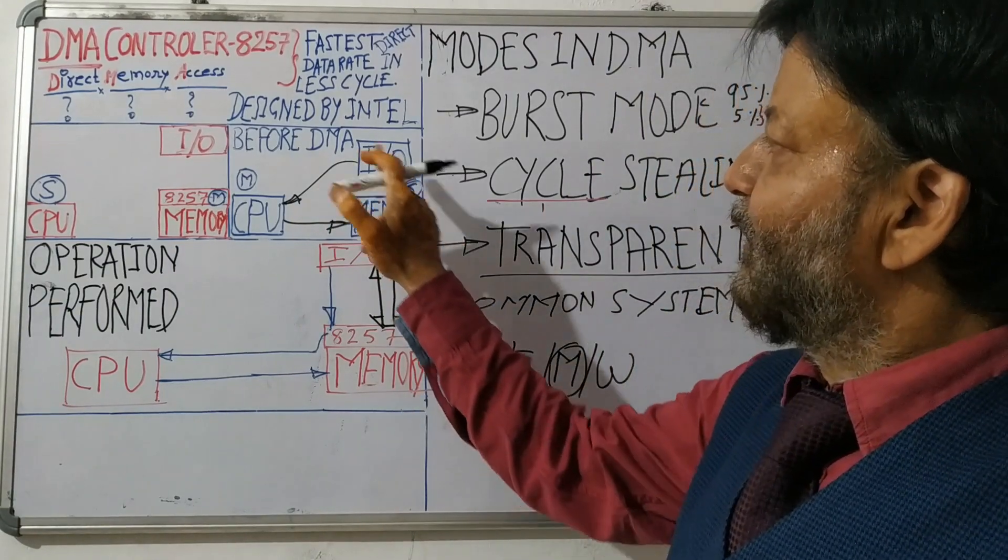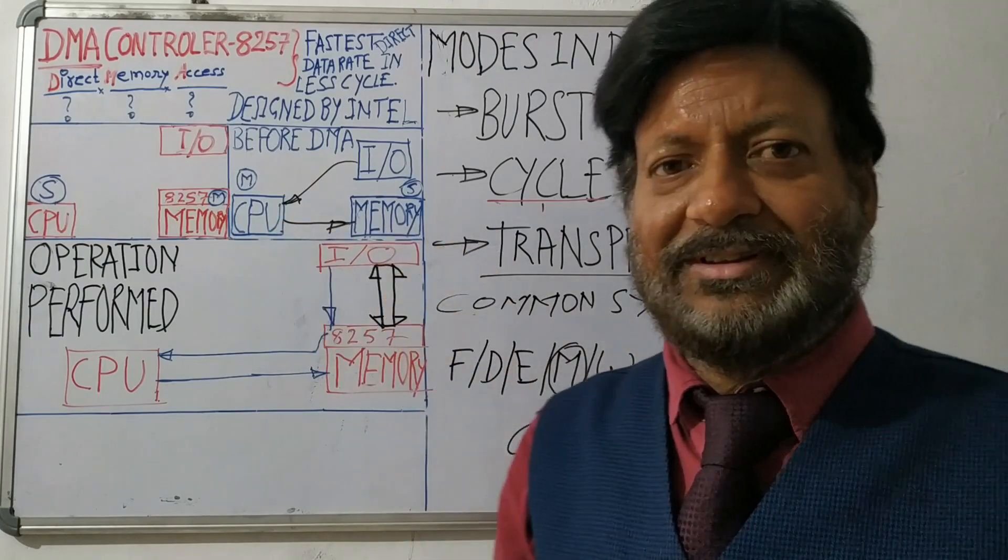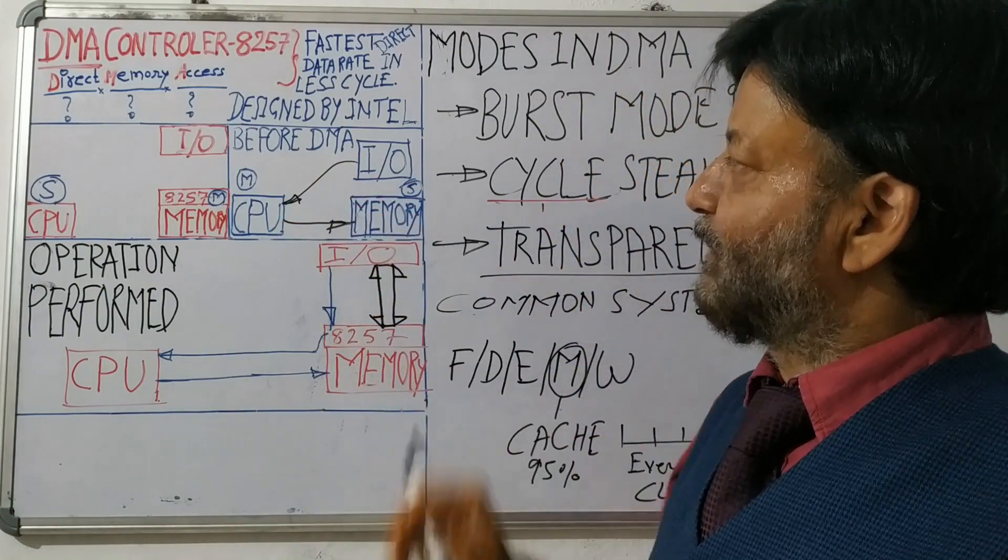One cycle for IO to CPU and another cycle is from CPU to memory. So this is the thing we need: two cycles in without DMA case.